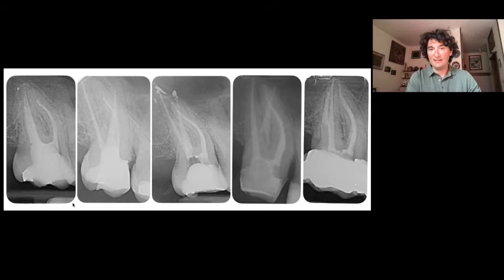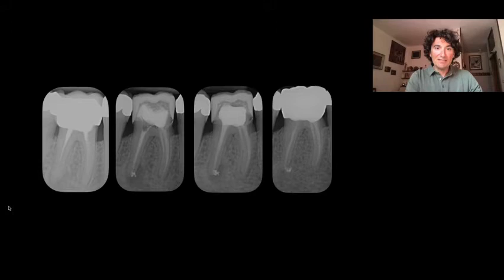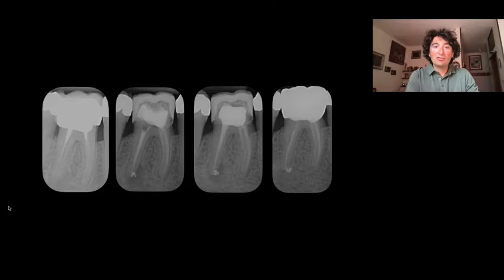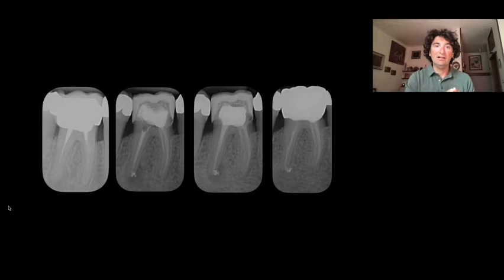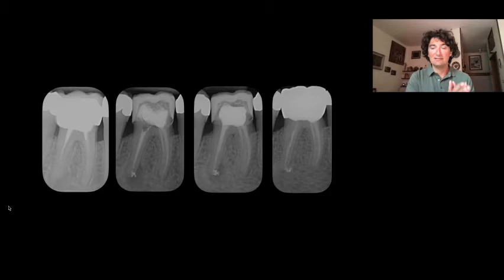A scenario that every one of us would like to find after 5, 10, or 15 years. Shaping can happen during retreatment or during the first treatment, and in both cases we have to try to preserve the original anatomy. We cannot talk about endo only when treating natural teeth — also during retreatment we have to try to preserve and maintain the original anatomy. This is the secret to being successful or doing something better than the previous operator.